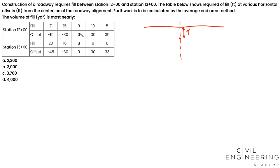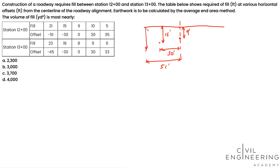At 30 feet away from the center line to the left, we need to fill by 15 feet. That means the original level of this point is lower than the center line location. The second point to the left is 51 feet away from the center line, and we need to fill by 21 feet — it's even lower. This vertical distance is 21 feet at that location.